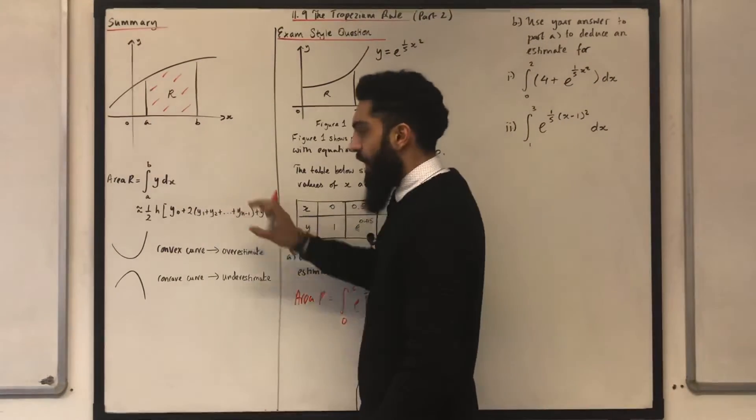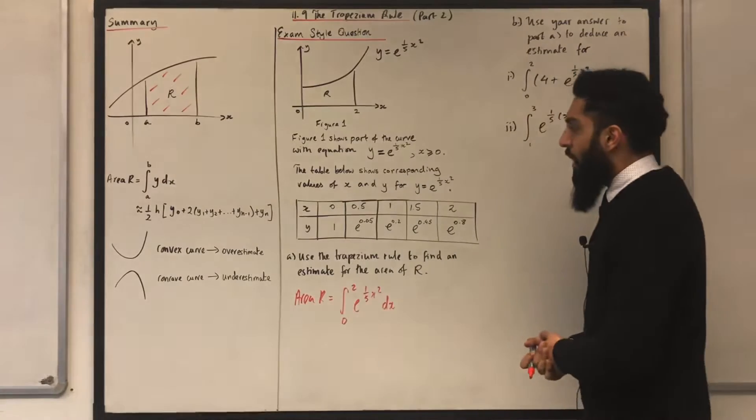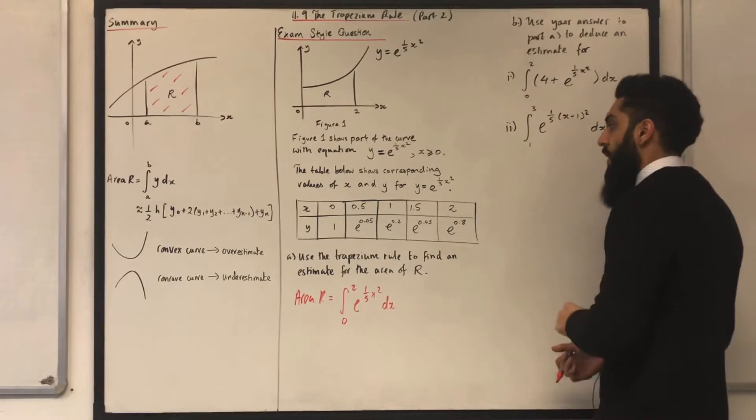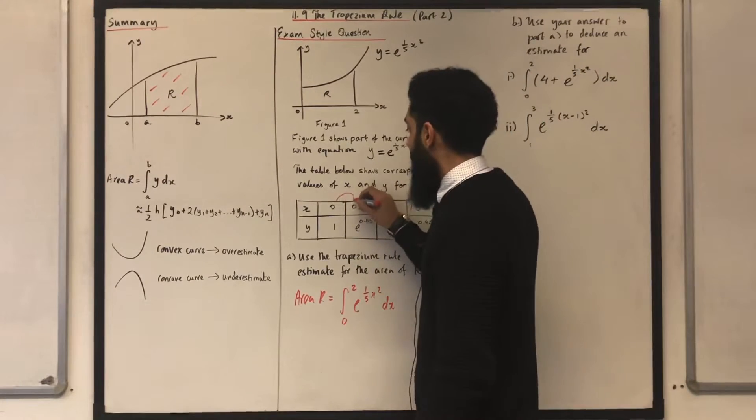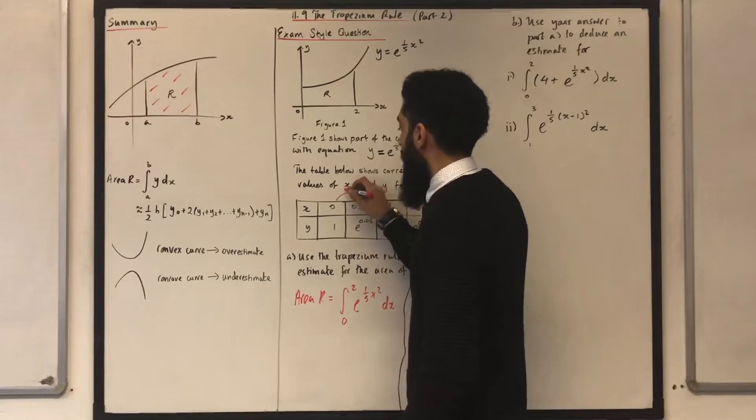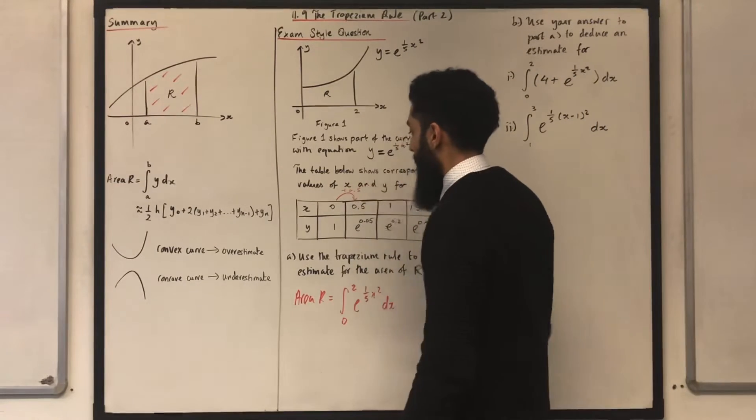Here is the Trapezian Rule. First of all, what is my h? The h is what the x values are going up in. In this particular case, the x values are going up in 0.5, so you're adding 0.5 each time. So that's my h value.